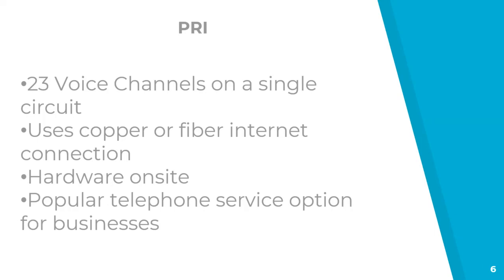Some pros of PRI service: the big one is quality of service is guaranteed, because it has its own dedicated circuit for that service, not running other applications or internet traffic — it's only dedicated for that voice service coming to your business. Another benefit is it works with older telephone systems that can't support voice over IP or SIP trunking yet. So PRIs are a great alternative to take advantage of some of those features that SIP trunking has, but still deliver it on a PRI service.